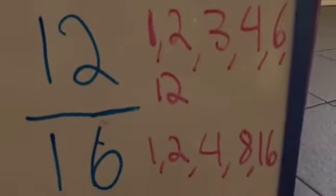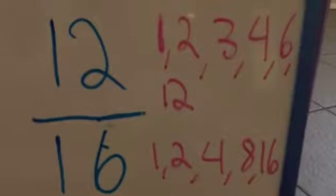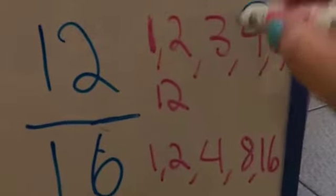Let's try to reduce this fraction, 12 over 16. So here are the factors. Can you find the greatest common factor? Well, in this case, it's 4.